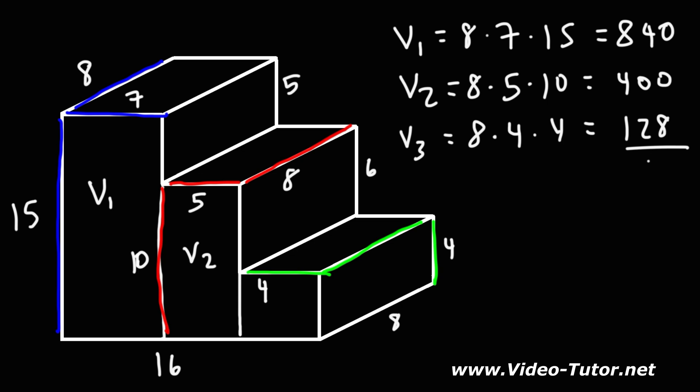So now we can add these three values to get the total volume: 840 plus 400 plus 128. This is going to be 1368 cubic units. So that's how we can find the volume of this composite rectangular prism.